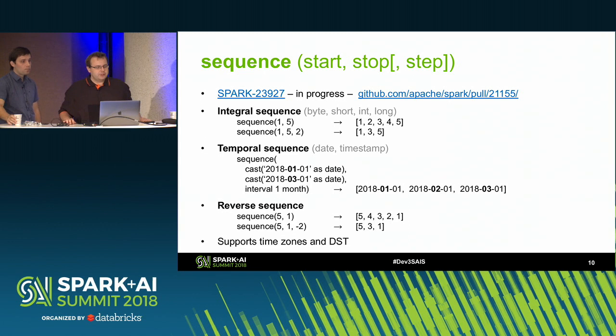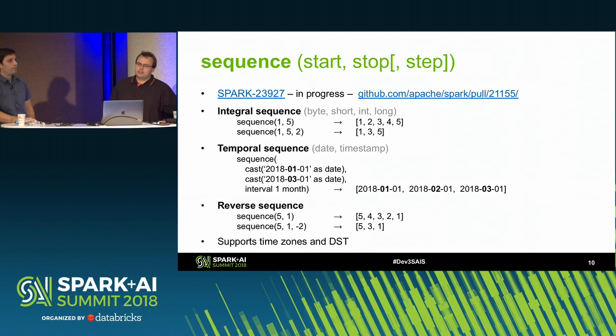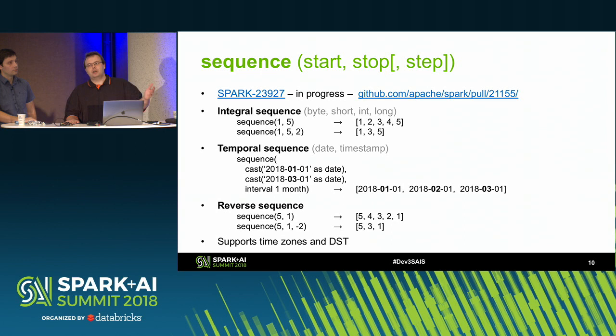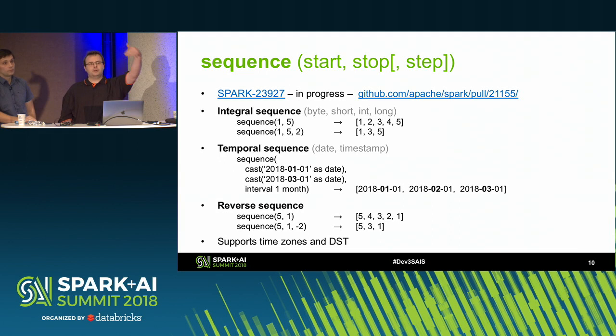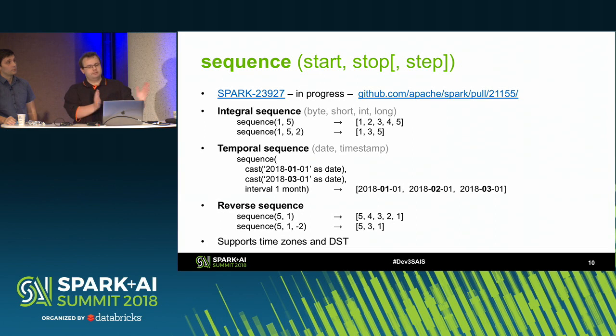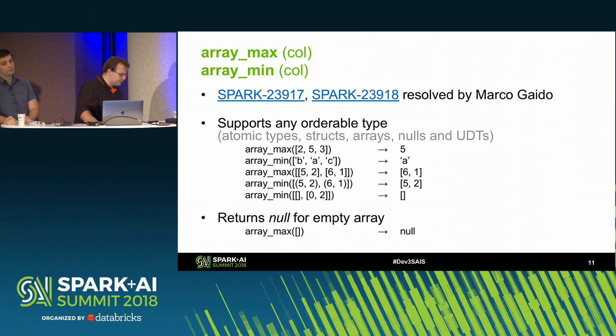For temporal sequences, we support date and timestamp types. For example, if you want an array of all days between January 1st and today at an interval of one day or one month, this function does that. We also support reverse sequences — specifying a negative step will go from back to front. There's also significant work done around supporting time zones and daylight saving times, which is an important aspect for temporal sequences.